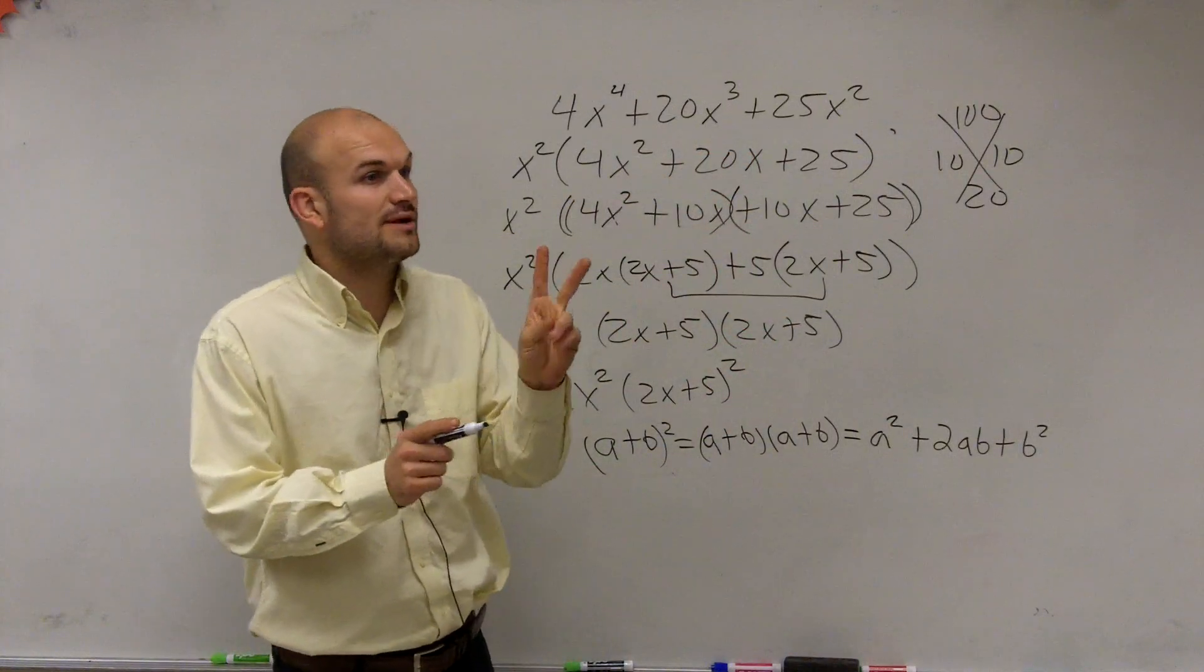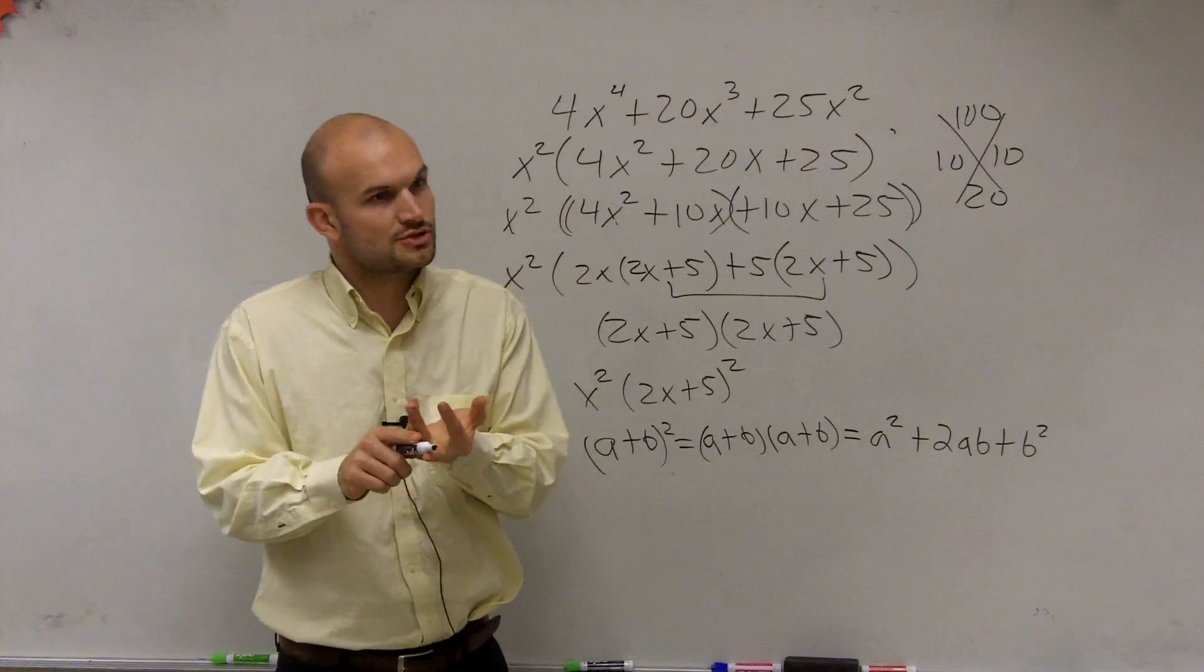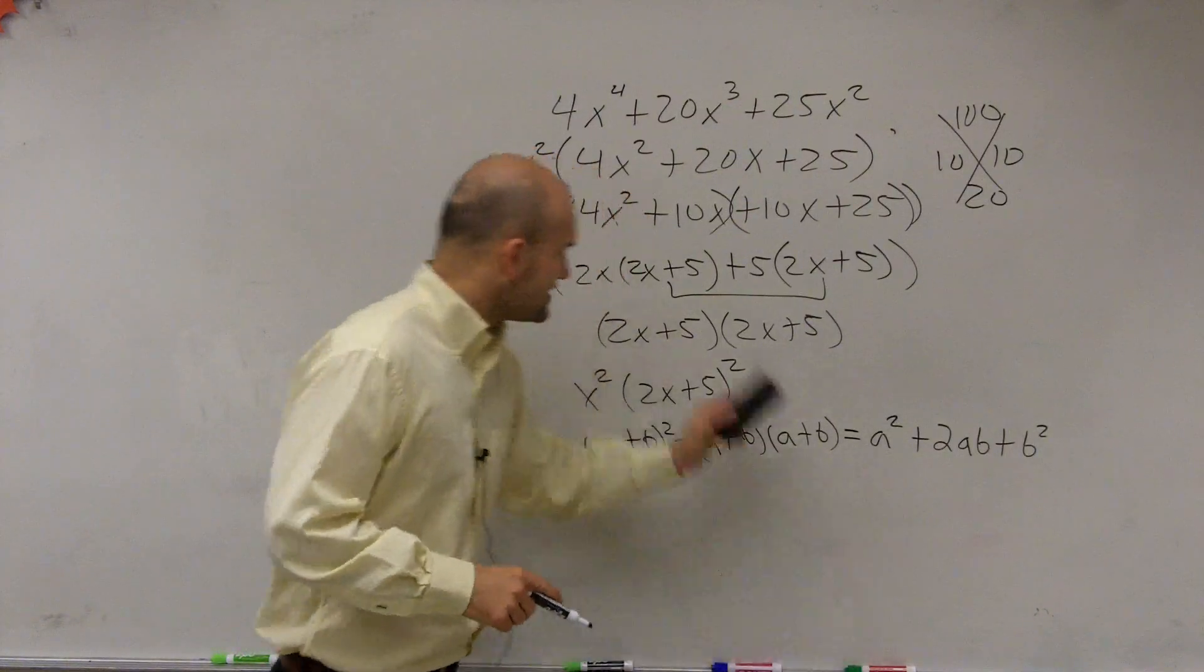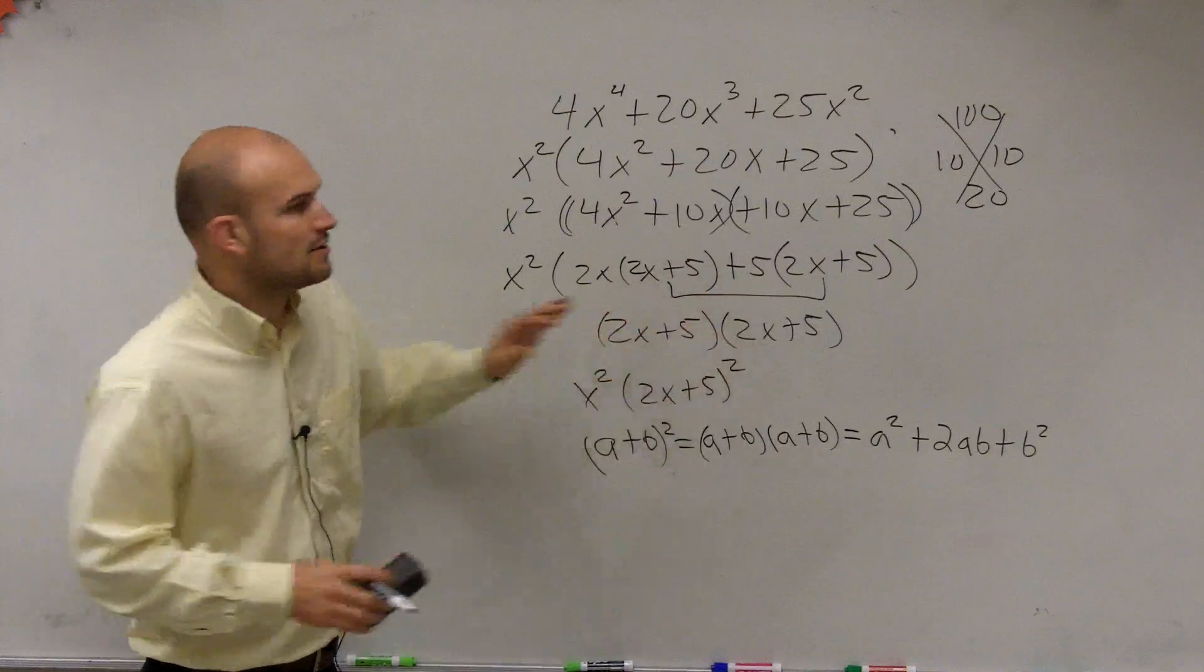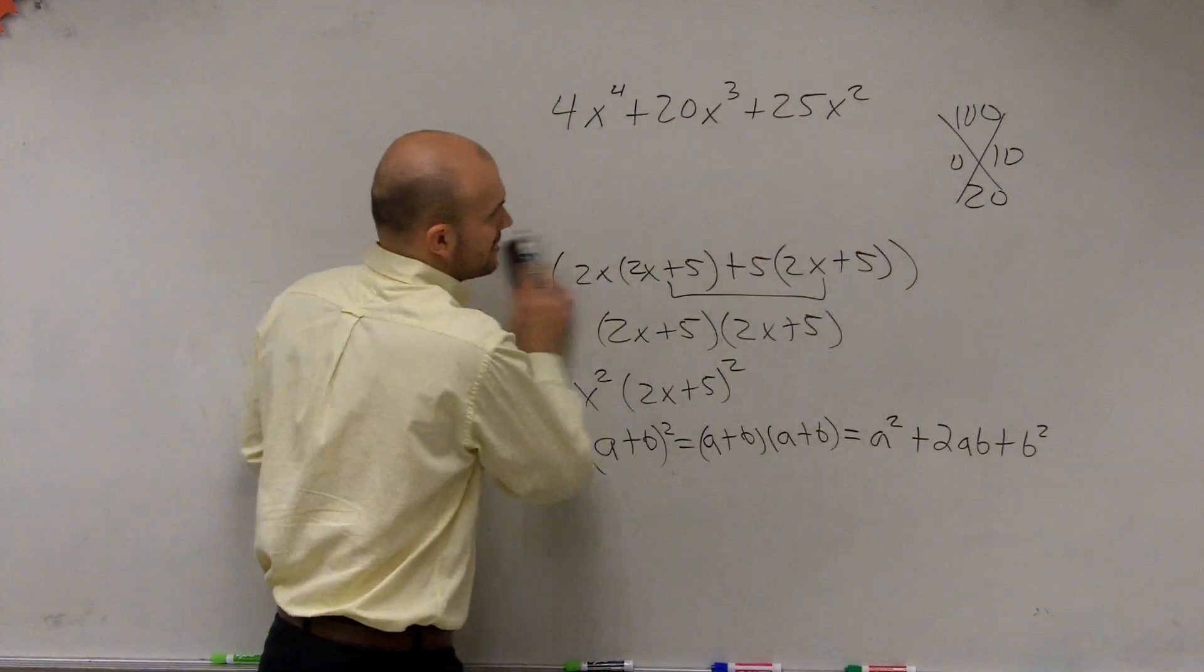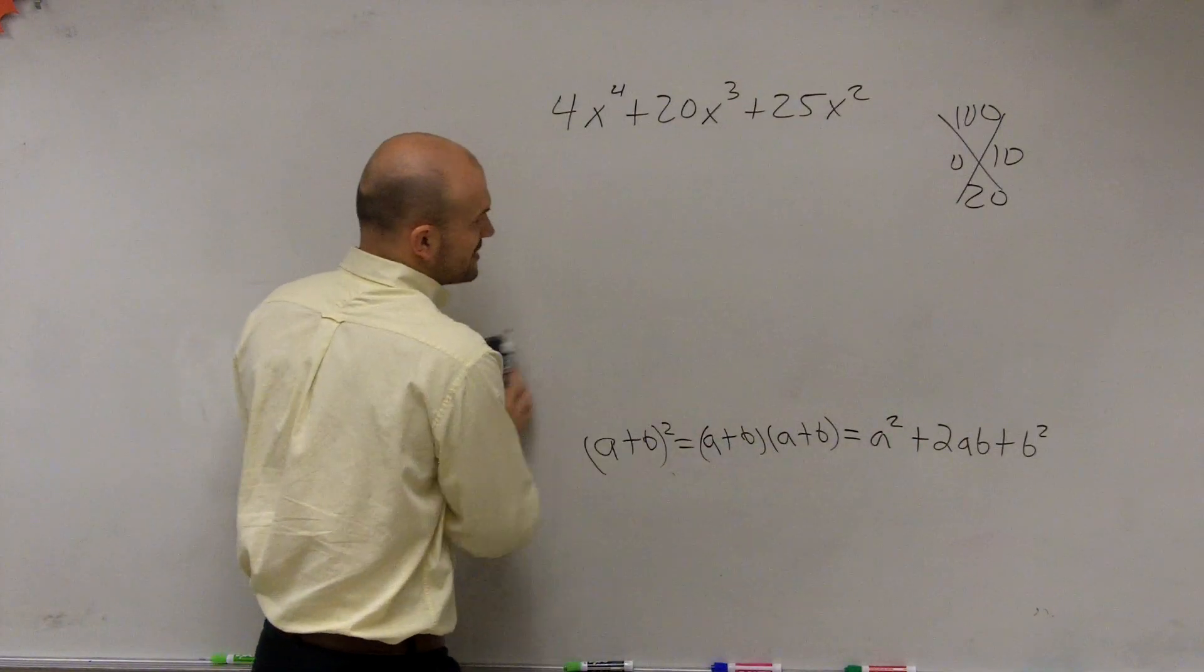Remember, difference of two squares is when you have two terms, the first term is a square number and the last term is a square number. So you can do this. There's nothing wrong with doing it this method. But let's try to look at trying to do things a little bit quicker.